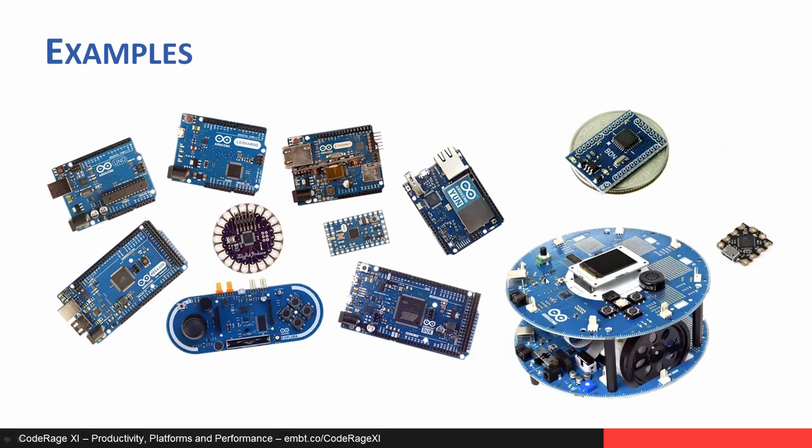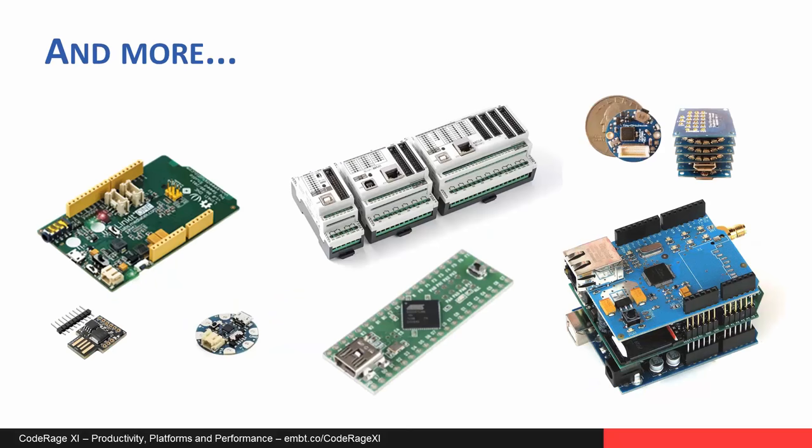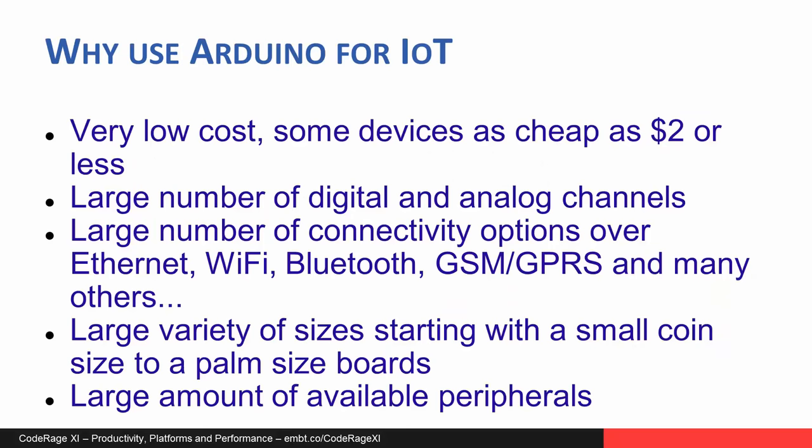Here are some examples of Arduino-type boards and examples of some of the clones. Why use Arduino for Internet of Things? It is a very low-cost platform — some boards are as cheap as $2 or less. Most boards have a large number of digital and analog channels. There is a large number of connectivity options: Wi-Fi, Bluetooth, GSM, GPRS, and many others. There is a large variety of sizes, starting from a small coin size to a pound-size board.